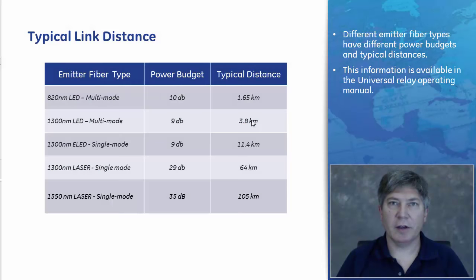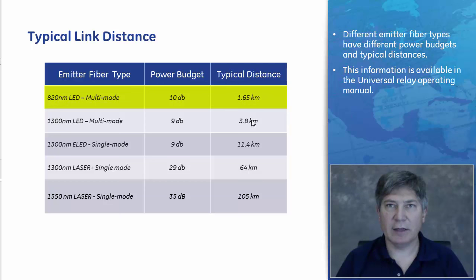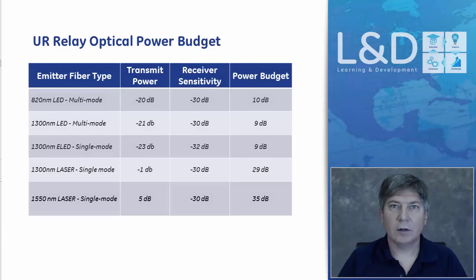This table from the UR manual outlines typical link distances based on emitter fiber type, showing different light sources, their associated mode types, power budgets, and typical distances. For example, an 820 nm LED in multi-mode has a 10 dB power budget and will operate for a typical distance of 1.65 km. At the bottom of the table, the 1550 nm laser light source in single mode has a power budget of 35 dBs and a typical distance of 105 km. A second table outlines the optical power budget for each emitter fiber type, including transmitting power, receiver sensitivity, and power budget.